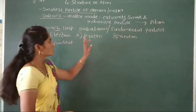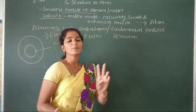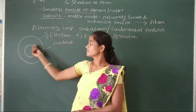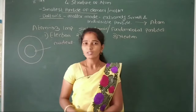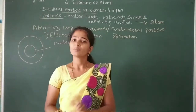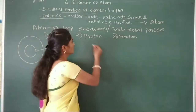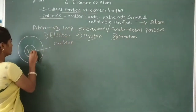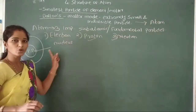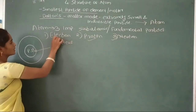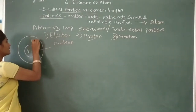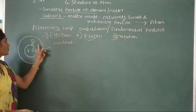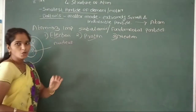Out of these 3 sub-atomic particles, 2 sub-atomic particles are present in the nucleus and 1 sub-atomic particle surrounds the nucleus. Which sub-atomic particles are present in the nucleus? These are protons and neutrons. Protons and neutrons are present at the center of the nucleus. The 3rd sub-atomic particle, that is the electron, is present in the extra-nuclear part of the atom, and these electrons are revolving around the nucleus.